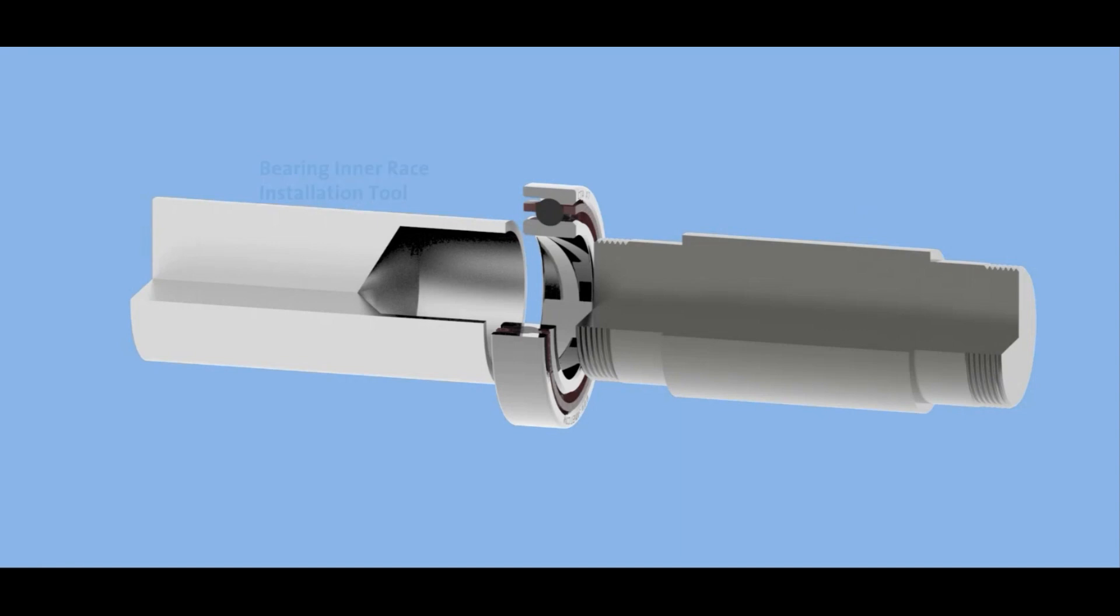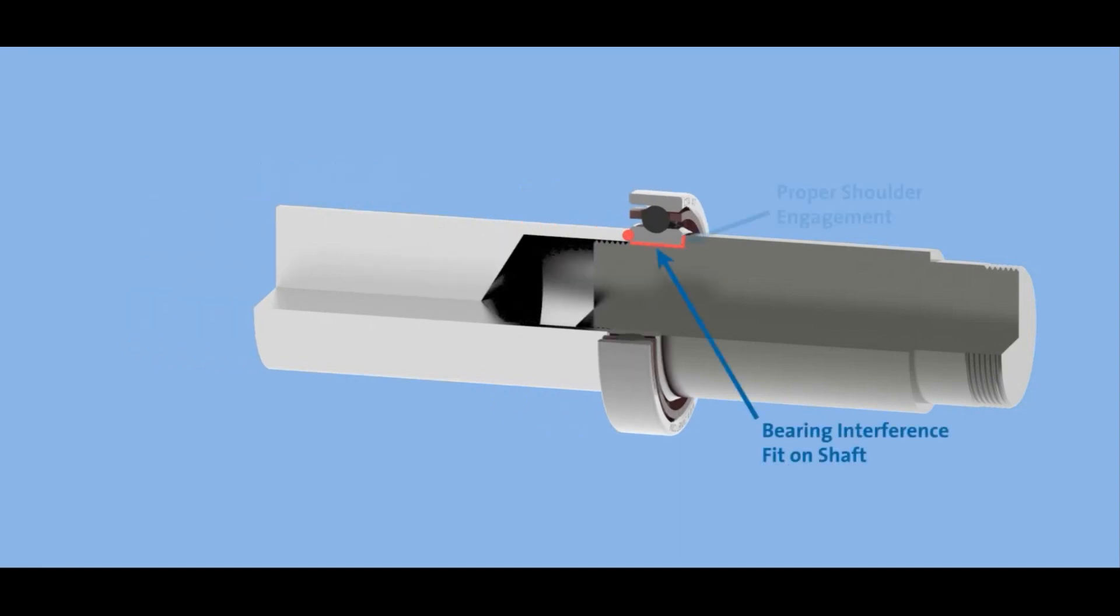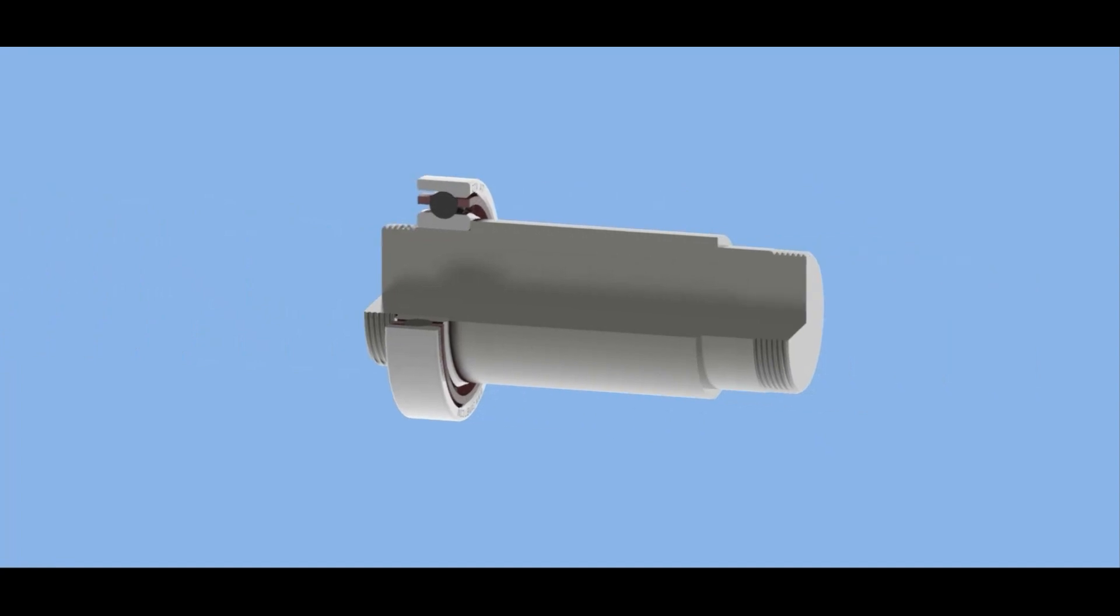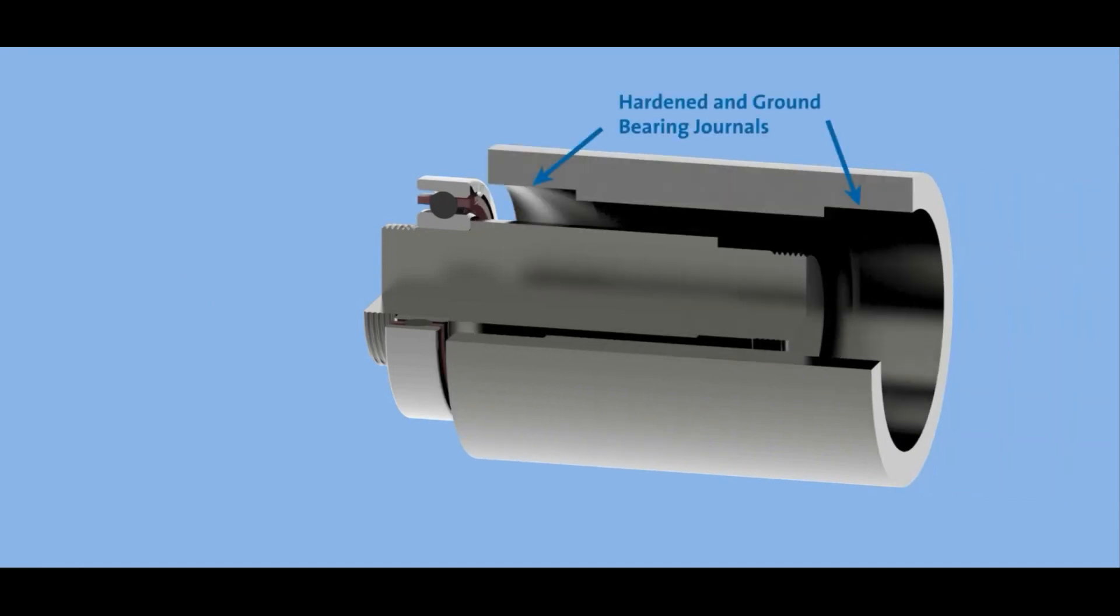When you are installing that bearing on the shaft, use an installation tool that presses against the inner ring of the bearing and press with a smooth constant motion until that bearing fits properly on the shoulder. What's important to remember is that we want no load going through the balls of the bearing. And when you have that sub-assembly ready to go into the housing,